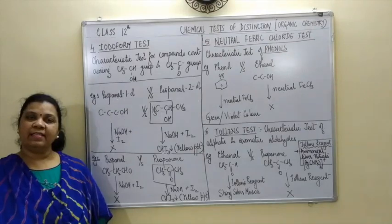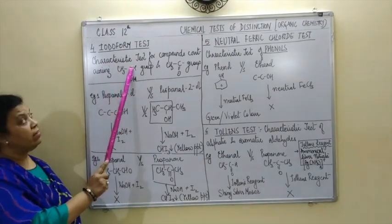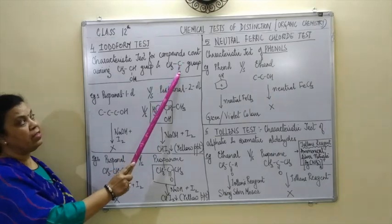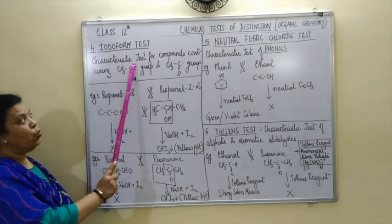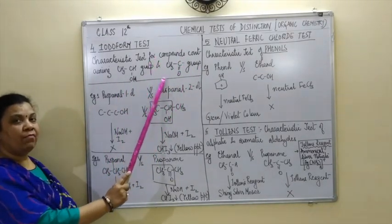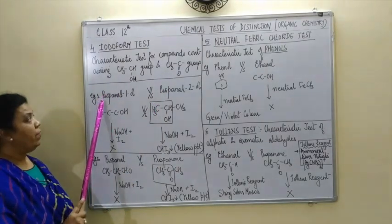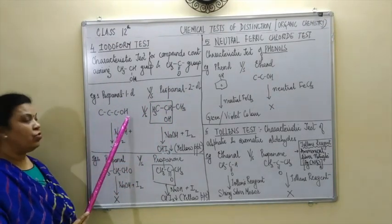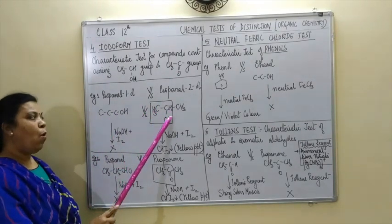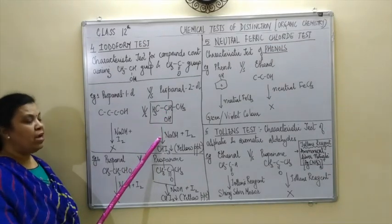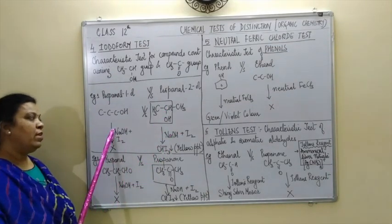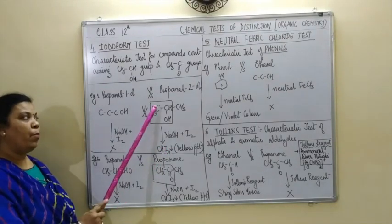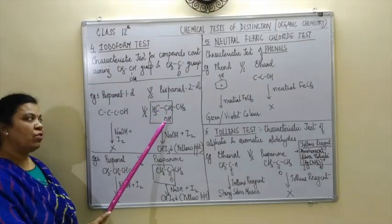Let us now move on to the fourth test, and that is the iodoform test. This is the characteristic test for compounds containing the CH3CHOH group, meaning this test is given by secondary alcohols and by carbonyl compounds which have a methyl ketone group. For example, to distinguish between propan-1-ol and propan-2-ol: propan-2-ol contains the CH3CHOH group. On addition of NaOH and I2 to both samples, you will get a yellow precipitate of CHI3, called iodoform, in case of propan-2-ol.